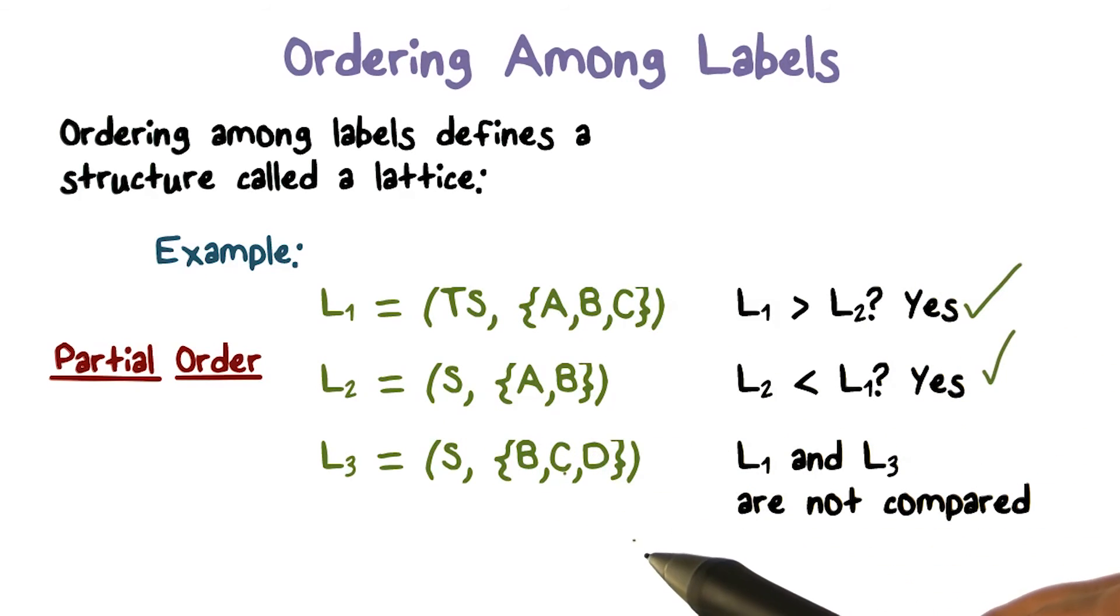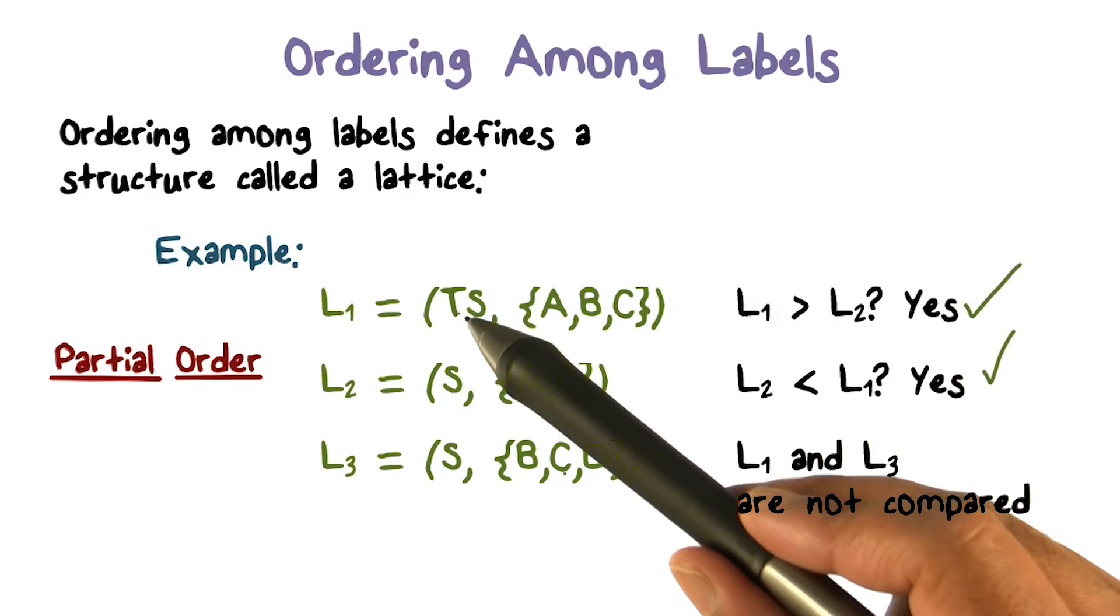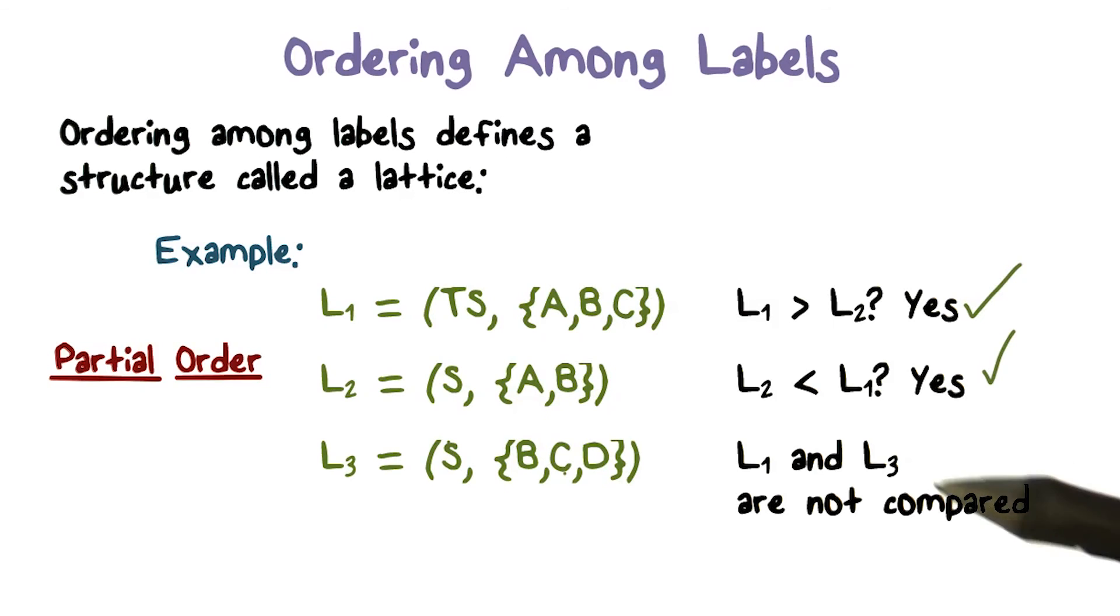Similarly, L3 is not greater than L1, and the two are not equal because the compartments are different and the sensitivity level is different. When neither one dominates the other one and they're not equal, then they cannot be compared, which is the third case that we're talking about.